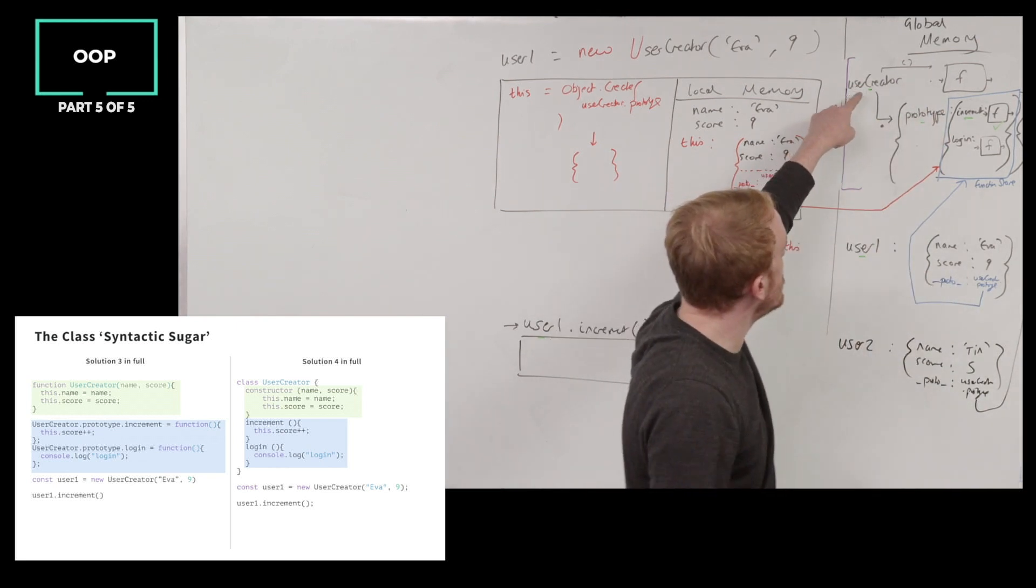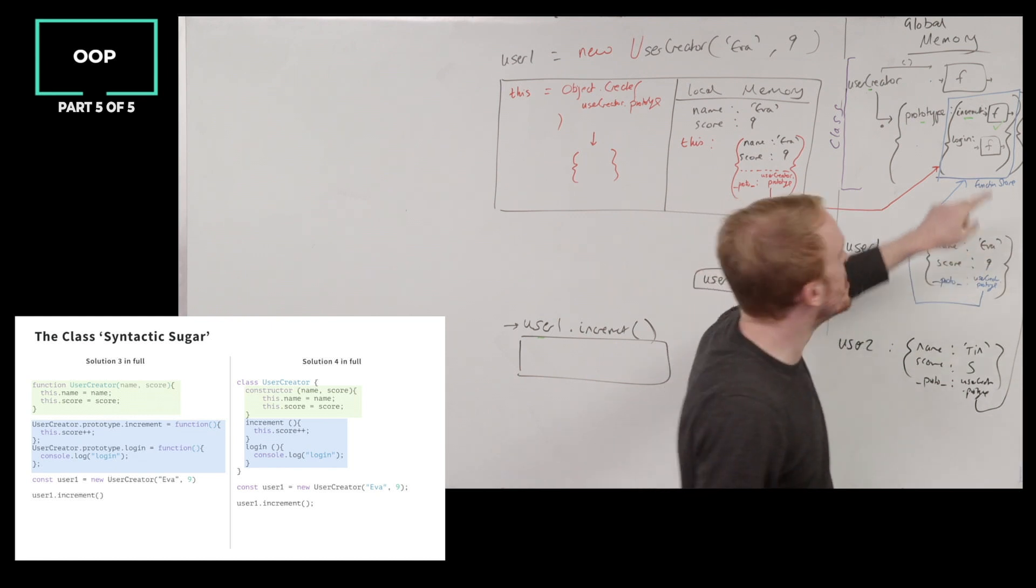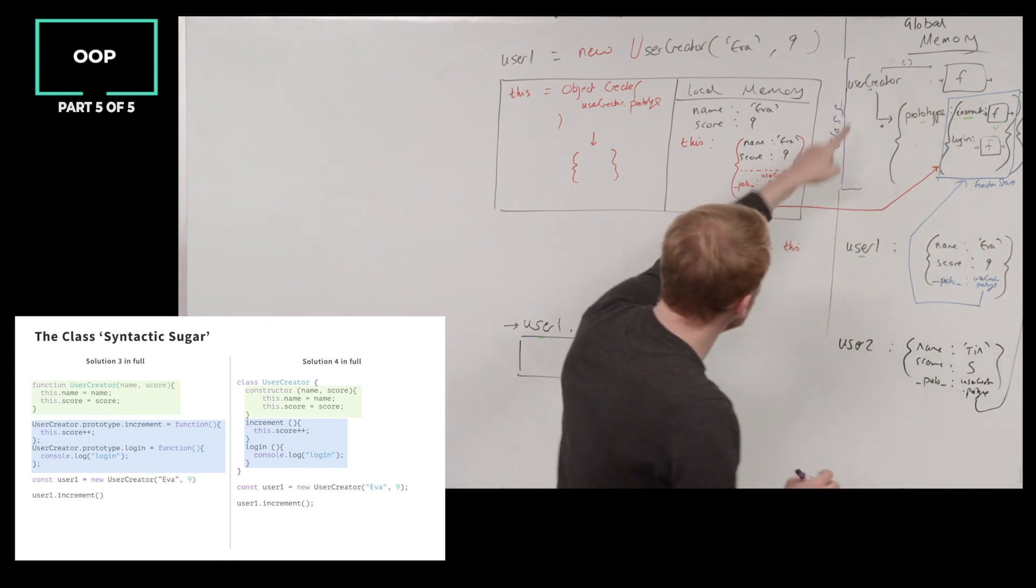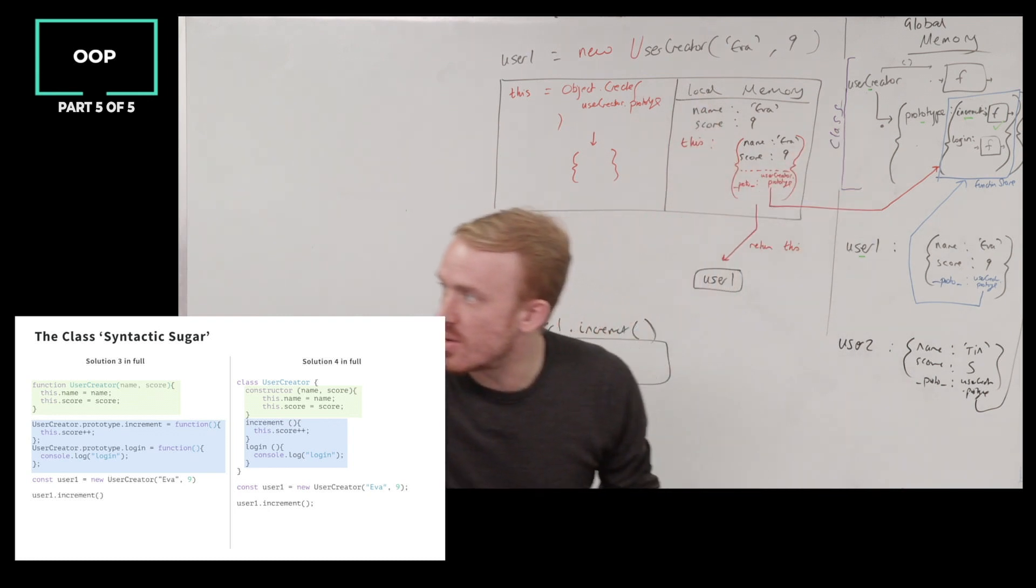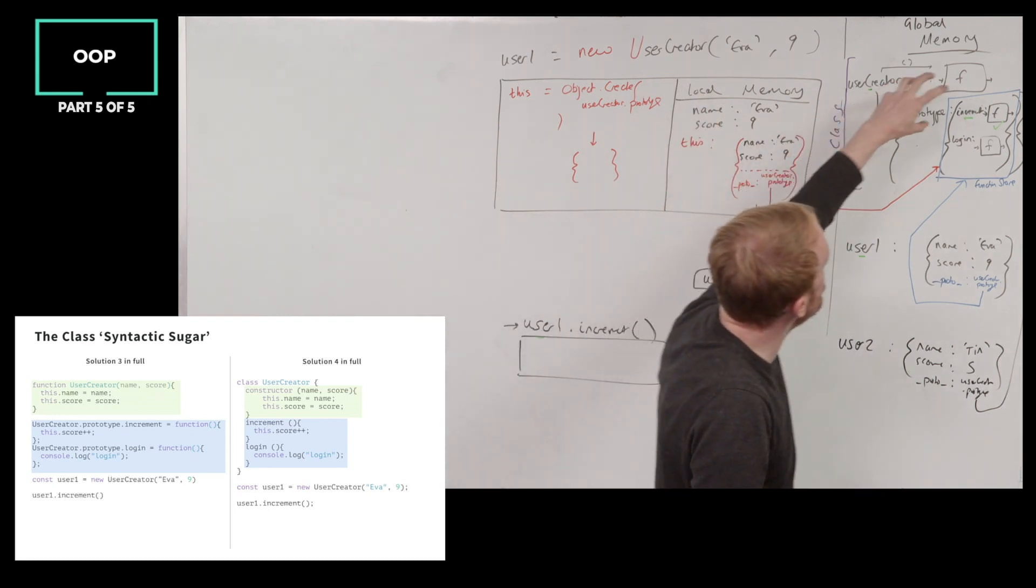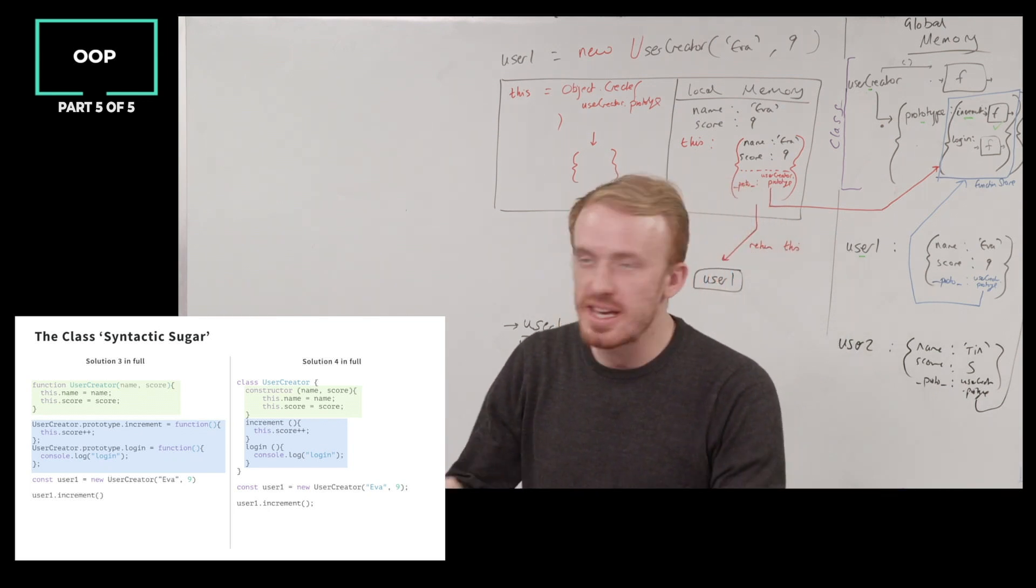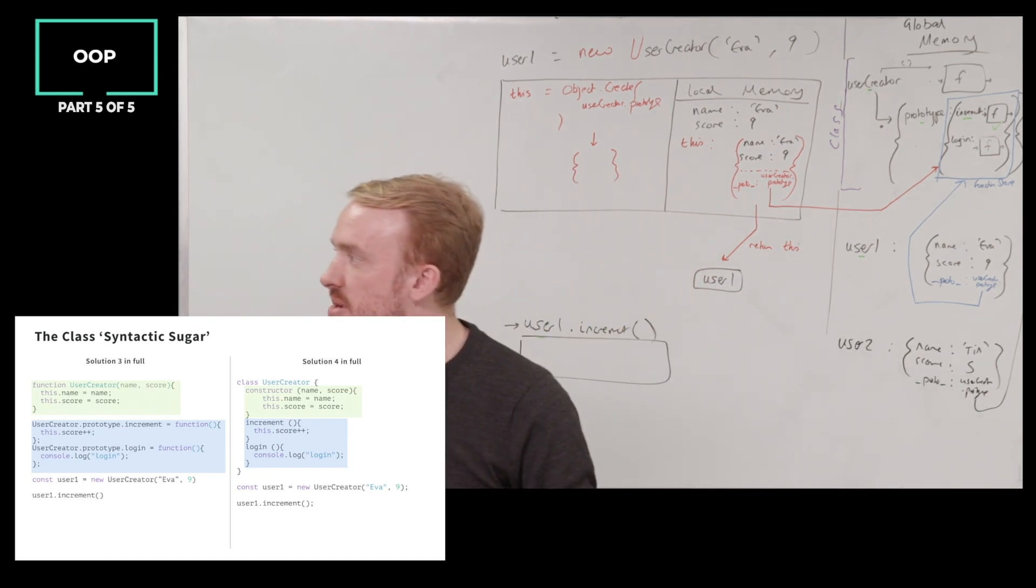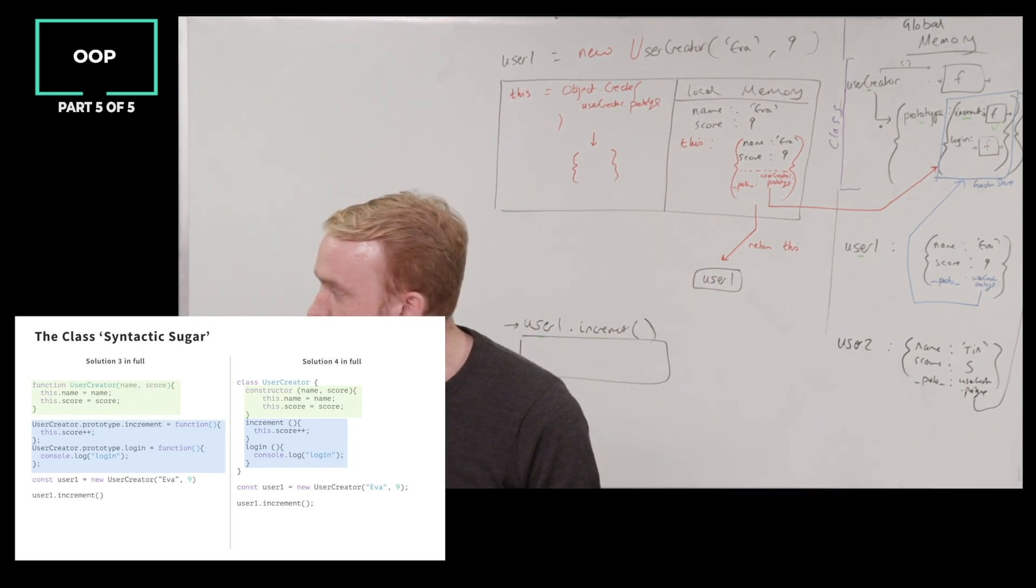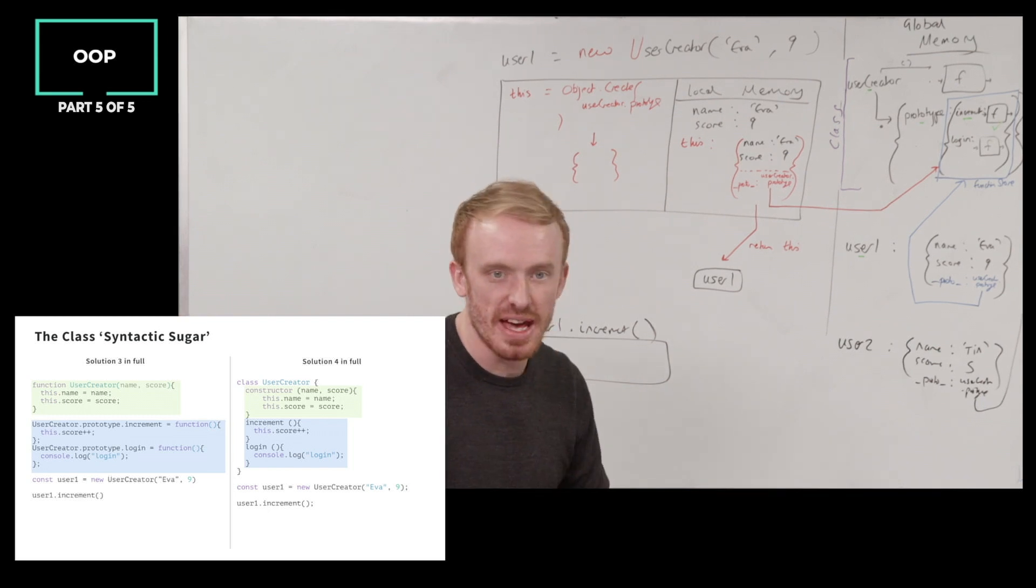So we define the user creator class, comprising its function version, the bit that when we call user creator is going to run the function version of it, but what subtitle does it give Philip, the bit which we use to call the function version of user creator? Constructor. Constructor, that's a subtitle, but it is absolutely, when I call the user creator function, we're going to call it user here, but the user creator function, it's going to grab that constructor subtitle bit and run that.